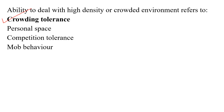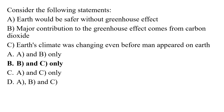Crowding tolerance refers to the ability to mentally deal with a high-density or crowded environment. The correct answer for this question is option one — crowding tolerance. Moving to the next question: consider the following statements — one, Earth will suffer without the greenhouse effect; two, major contributions to the greenhouse effect come from carbon dioxide; three, urban climate was changing even before humans appeared on Earth.